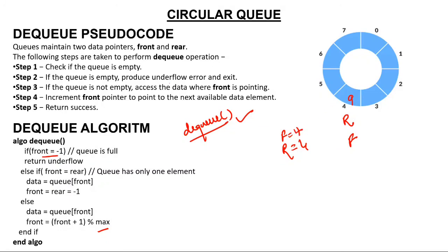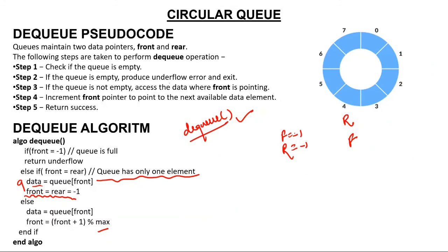Now front = 4 and rear = 4, meaning only one element remains. Call dequeue again: is front equal to -1? No. Is front equal to rear? Yes — this proves the queue has only one element. So delete it: data = Q[front] = Q[4] = 9. Since 9 was the last element and the queue is now empty, set both front and rear to -1.